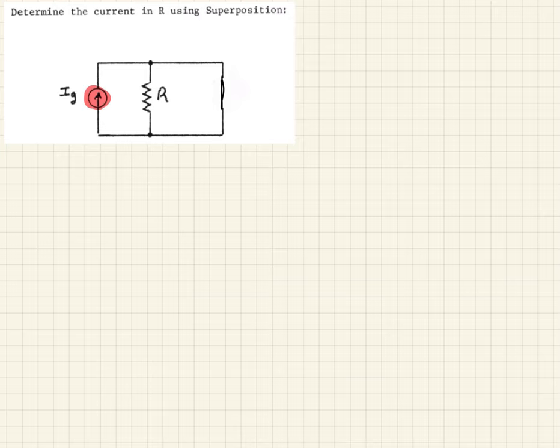And so when we do, we should be able to see pretty quickly that we have this current coming around here. And when it gets to this point, we either have a short circuit or R. So all the current is going to want to go through the short circuit and none of it's going to go through R.